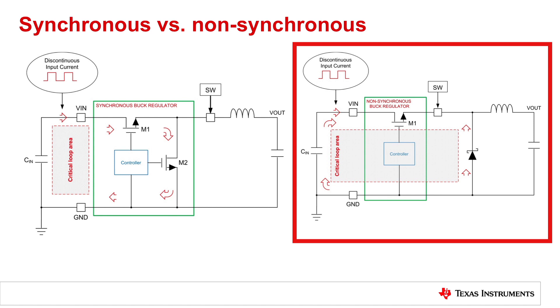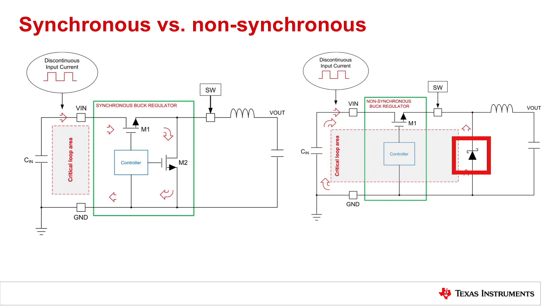If we look over here on the right-hand side, we see a typical non-synchronous converter. In this case, we have a Schottky diode that takes the place of transistor M2, and that's the key difference between these two power supplies. Because the Schottky diode is external and physically larger than typically the input capacitor or the IC, that necessitates the current loop to be actually a little bit larger than it is in a synchronous converter for the same current rating and the same voltage and power ratings. So with a non-synchronous converter, you're almost forced to have a slightly larger critical loop area than you do for a synchronous converter.